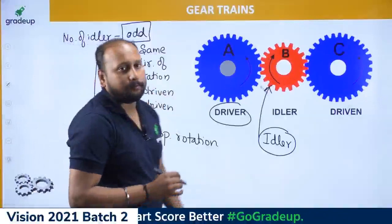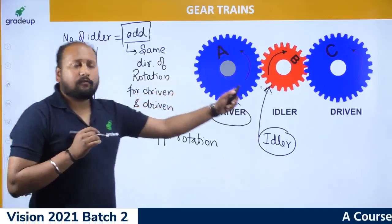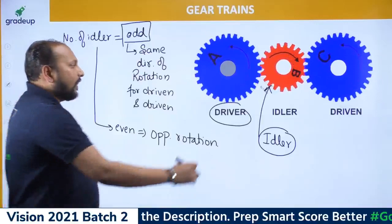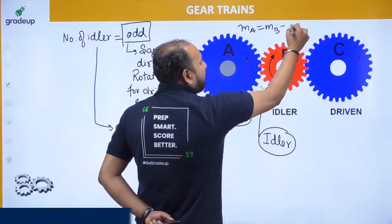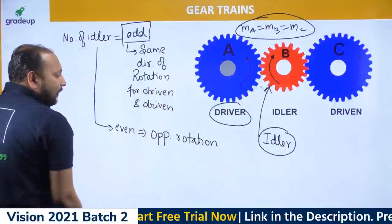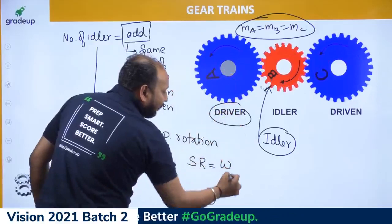All gears in a simple gear train are in mesh end to end, so they all have the same module: m_A = m_B = m_C. Therefore, the speed ratio is: omega_A / omega_C = T_C / T_A. For gears A-B: omega_A / omega_B = T_B / T_A, and for B-C: omega_B / omega_C = T_C / T_B, giving overall speed ratio T_C / T_A.